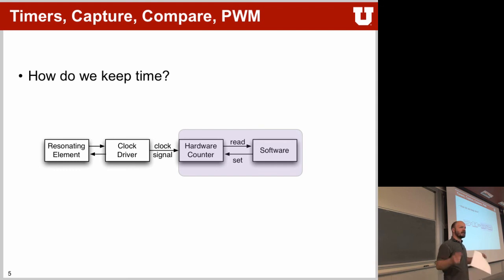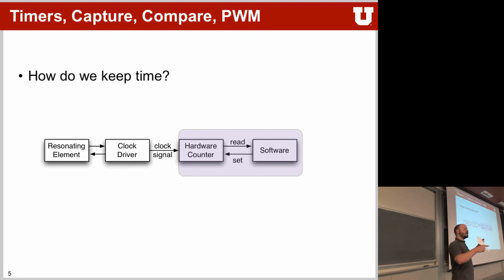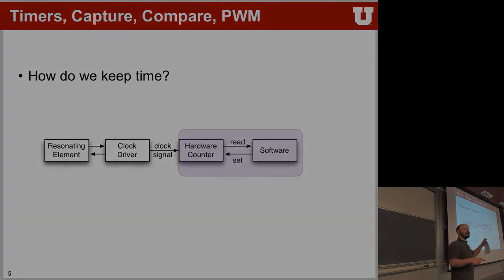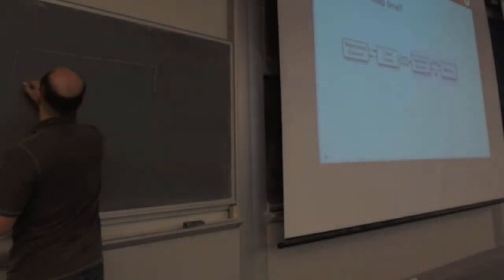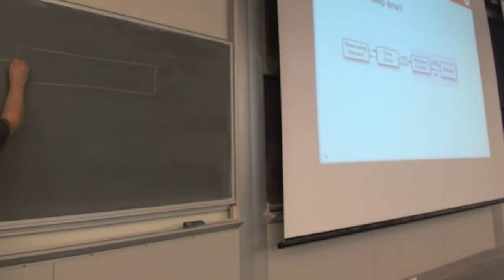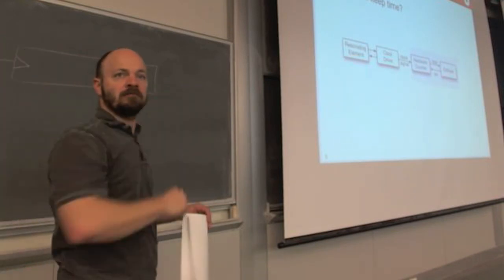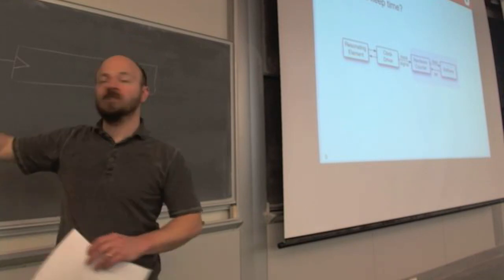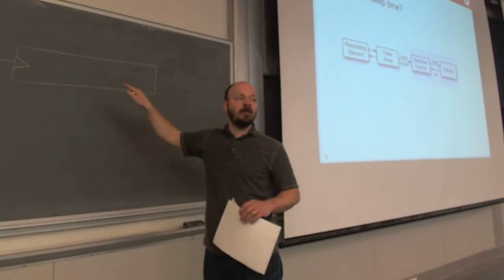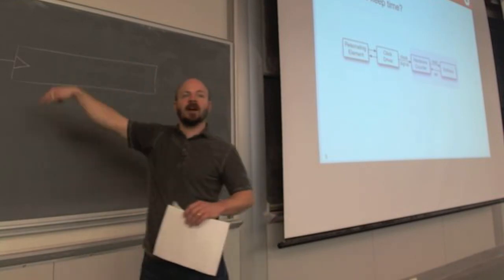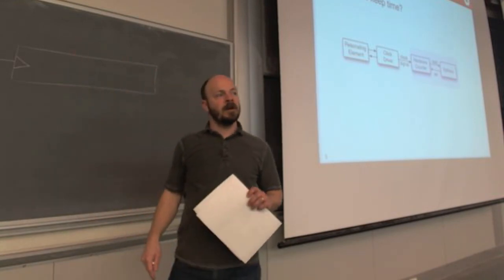From last lecture, what do you remember about the timer? What is the key element? An oscillator — yes. But then what else? A counter. So you have a counting register that has a clock input. The clock comes from the resonating element with its driver, and it goes into a counter that counts up by one on each rising edge.